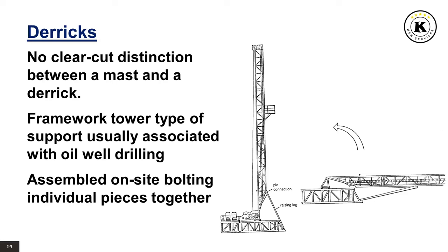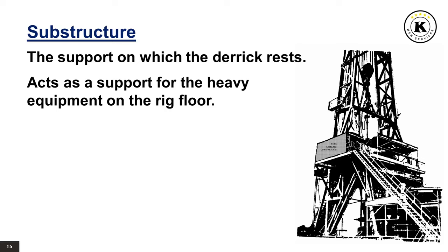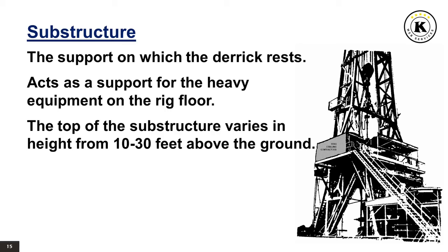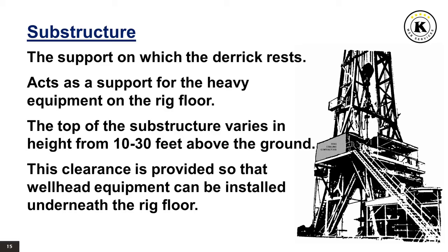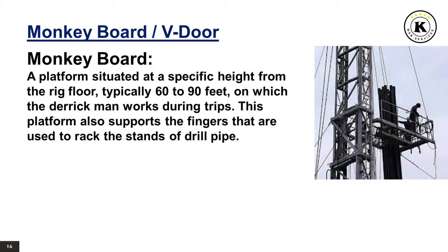The substructure is the support on which the derrick rests and also acts as support for heavy equipment on the rig floor. Its top varies in height from 10 to 30 feet above the ground, providing clearance so that wellhead equipment can be installed underneath. The monkey board is a platform at 60 to 90 feet from the rig floor where the derrick man works during trips, and it supports the fingers used to rack stands of drill pipe. The V-door is a triangular opening on the front of the derrick to allow drill pipe and equipment to be picked up from the catwalk and brought into the derrick.